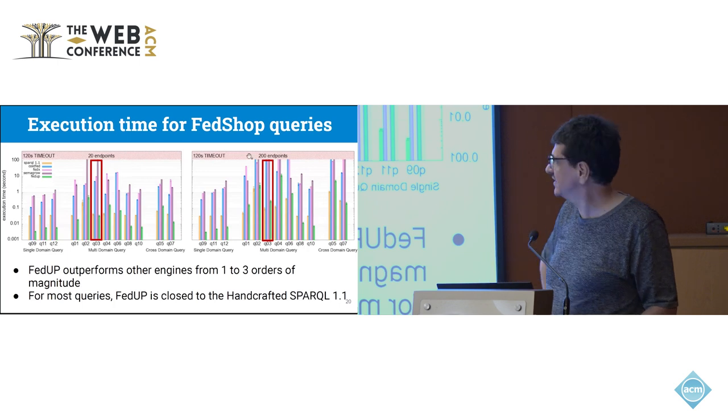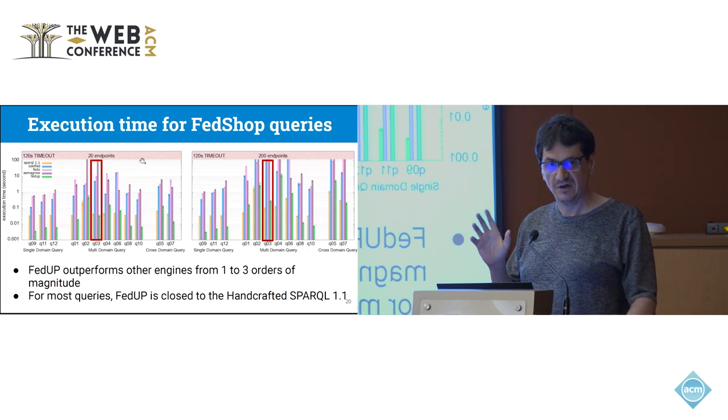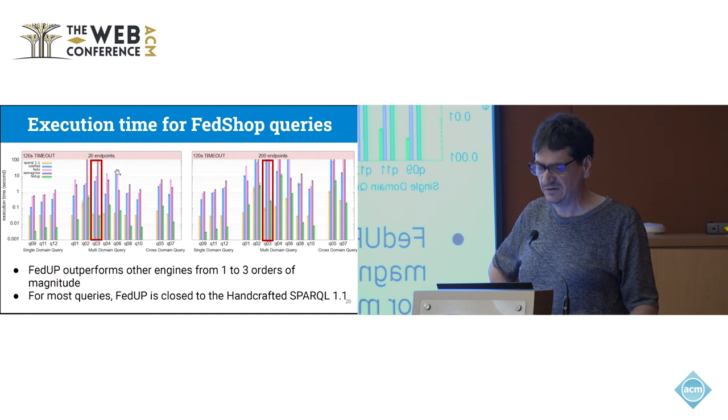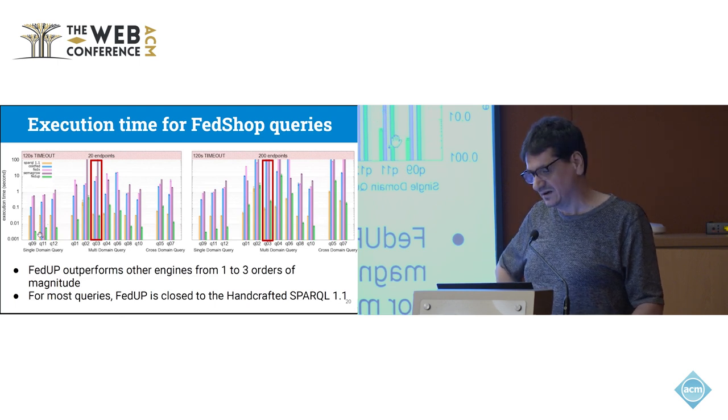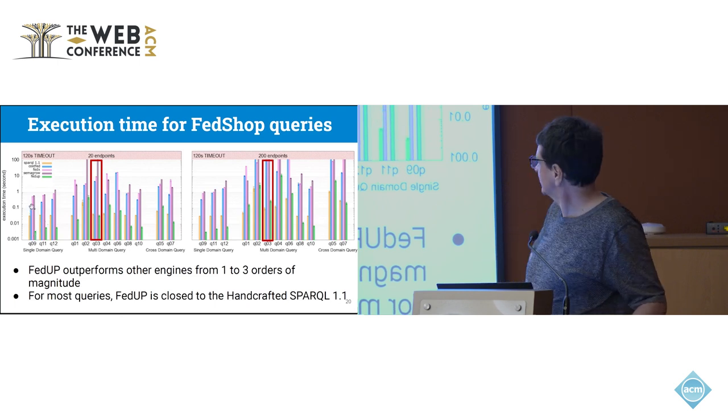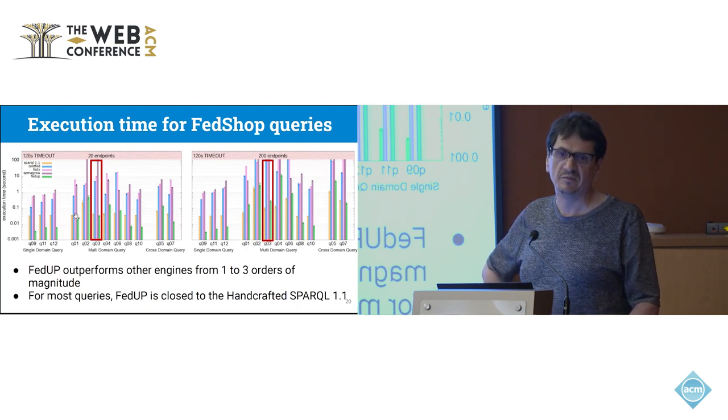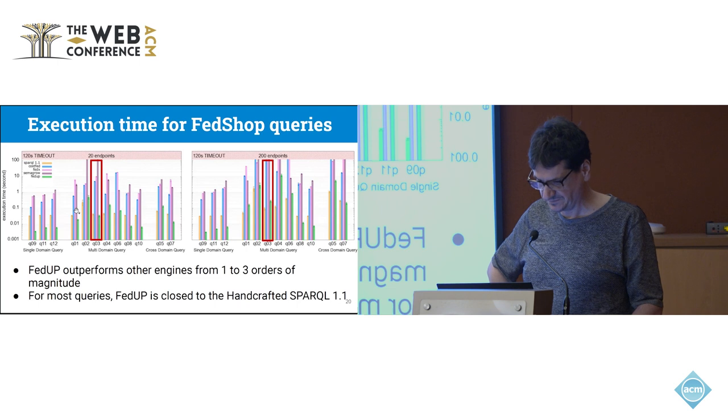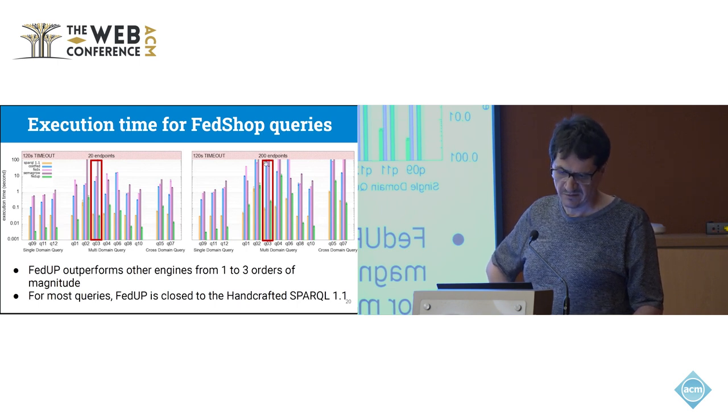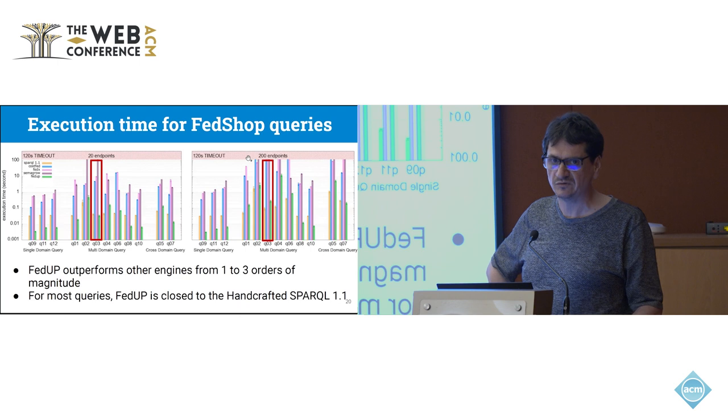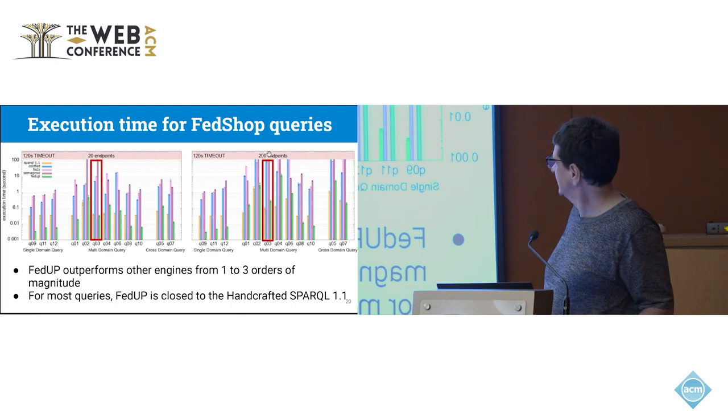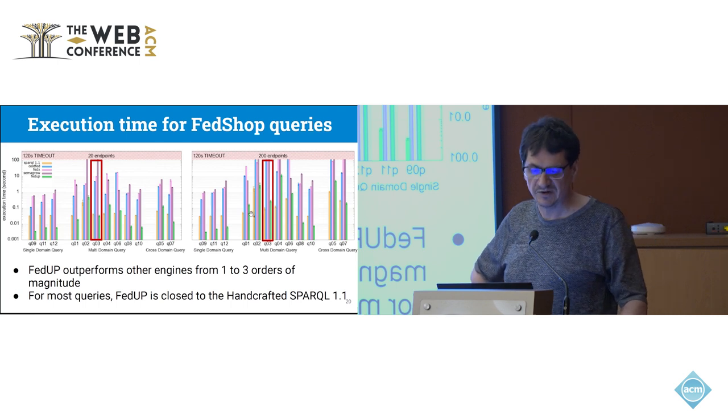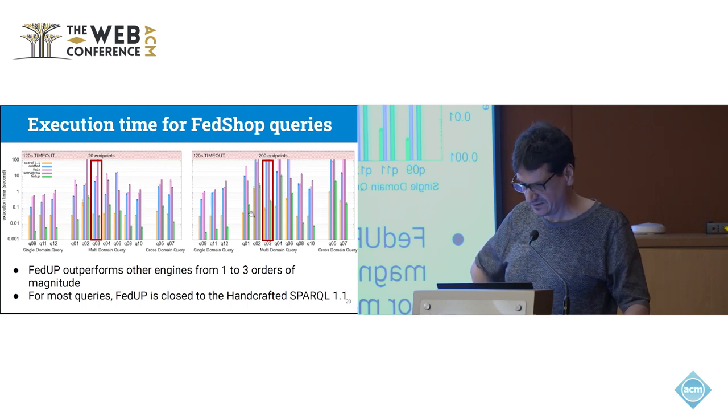Now, if we look to the FedShop benchmark, you can have different configurations. Here it's on 20 endpoints, and here it's on 200 endpoints. And here, now it's very clear. FedUp is the green. Cosfed is always the blue. And you see here, you have orders of magnitude in the execution times. And there is a very short timeout, but we let the query run. The order of magnitude is really, really huge. In this setup, we can see clearly that FedUp scales much better than competitor baseline.